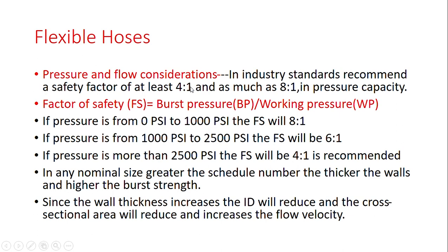Regarding pressure and flow considerations for flexible hoses: industry standards recommend a safety factor of at least 4-to-1 and as much as 8-to-1 in pressure capacity. For working pressures from 0 to 1000 PSI, the safety factor is 8-to-1. From 1000 to 2500 PSI, the safety factor is 6-to-1. Above 2500 PSI, a safety factor of 4-to-1 is recommended.